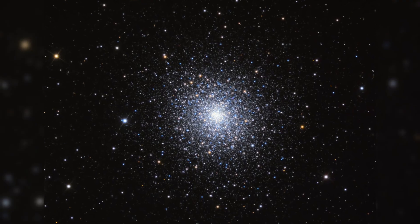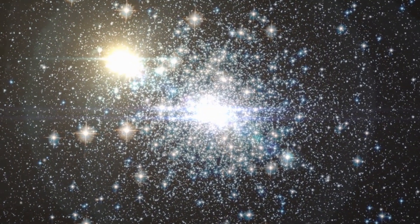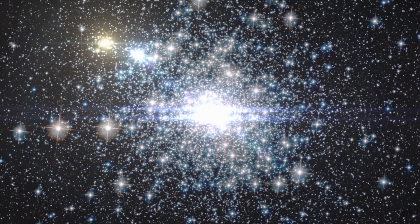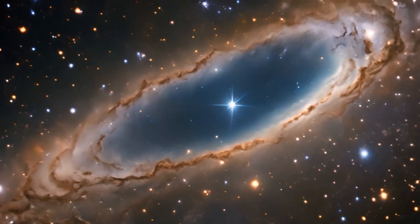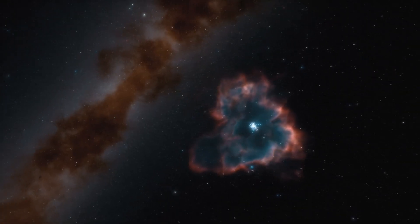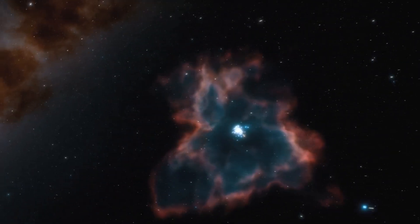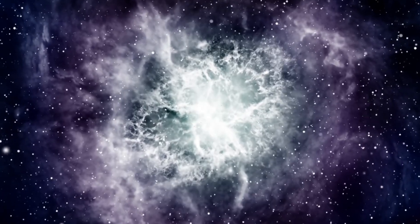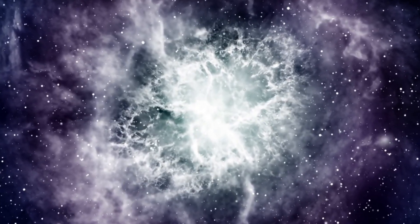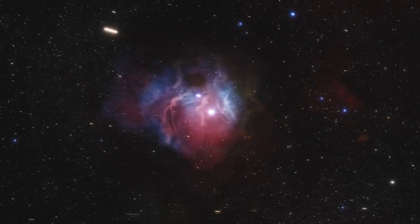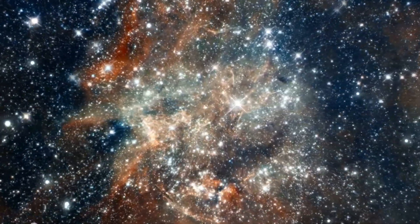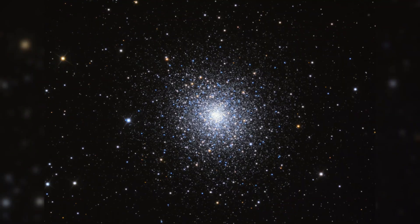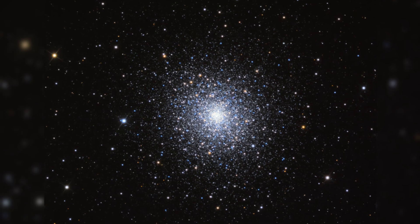Globular clusters, such as M92, consist of tightly packed groups of stars that are thought to have formed simultaneously, making it easier for astronomers to ascertain their ages. Stars undergo different life cycles based on their mass at birth. Larger stars consume their fuel rapidly and have shorter lifespans, while smaller stars last significantly longer. Understanding how many stars in a cluster have moved beyond their initial fuel burning phase offers insights into when the entire cluster began.